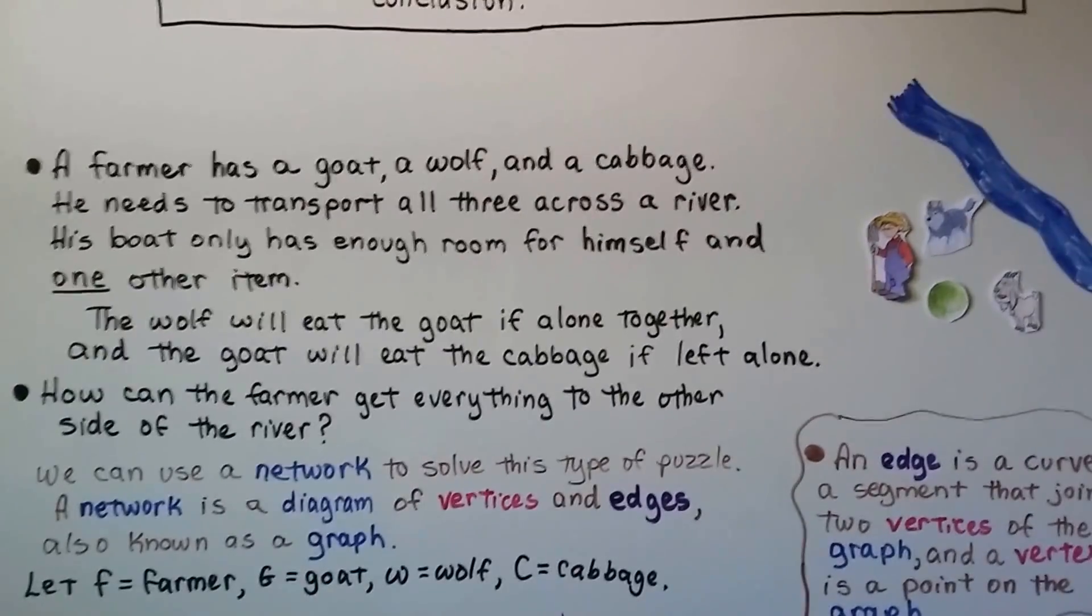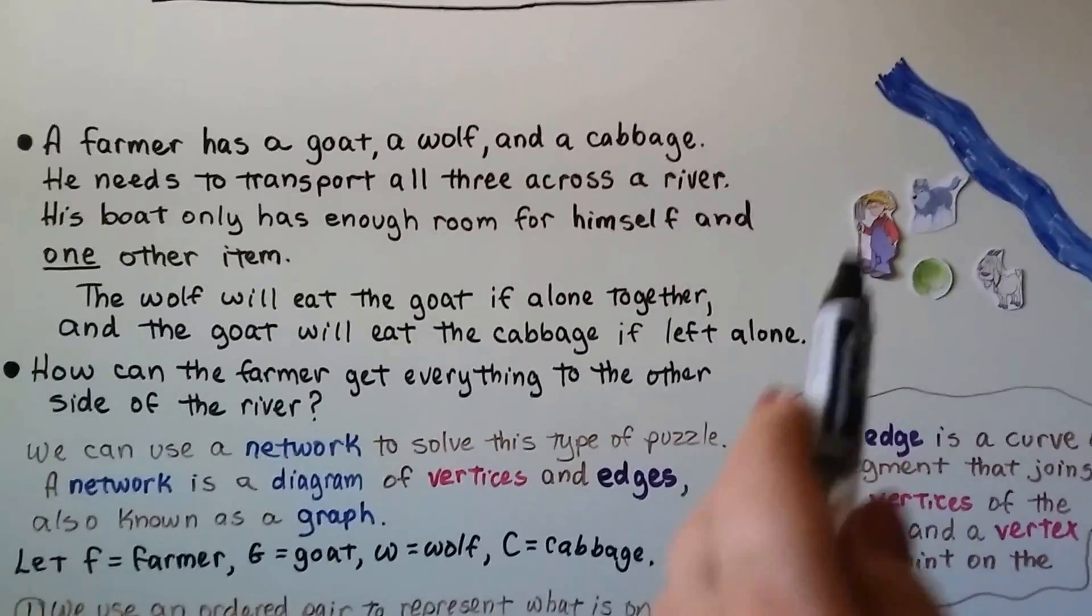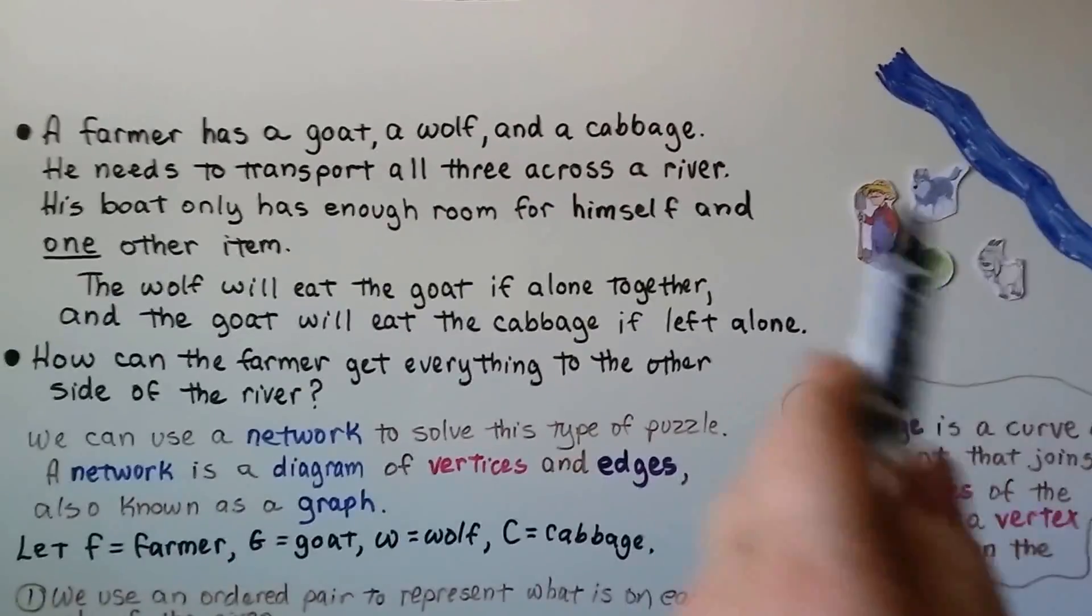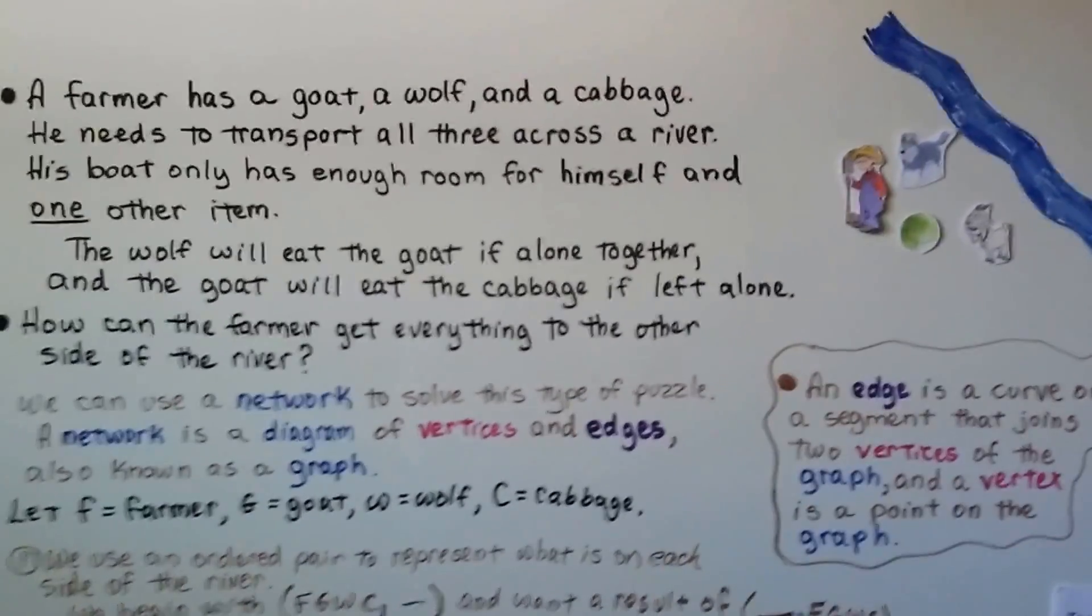This farmer needs to transport all three across the river. His boat only has enough room for himself and one other item. So he can't take two across or all of them across, he can only go one at a time.